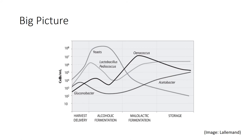You can have malolactic fermentation going along with primary fermentation — that's a discussion for another time. During intentional inoculated malolactic fermentation, species counts of Gluconobacter, Oenococcus, and Lactobacillus can all go up, and they plateau during the storage phase. The bad news is that high pH favors all of these — acetobacter, gluconobacter, lactobacillus, and pediococcus — with the exception of Oenococcus. When you have a higher pH, you run the risk of having these players emerge.